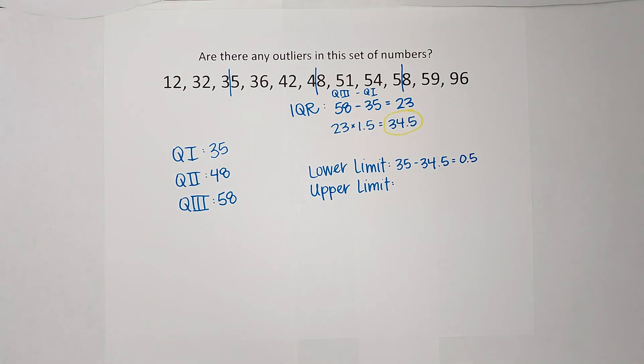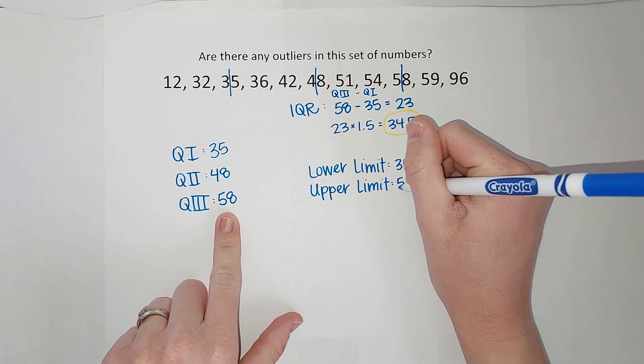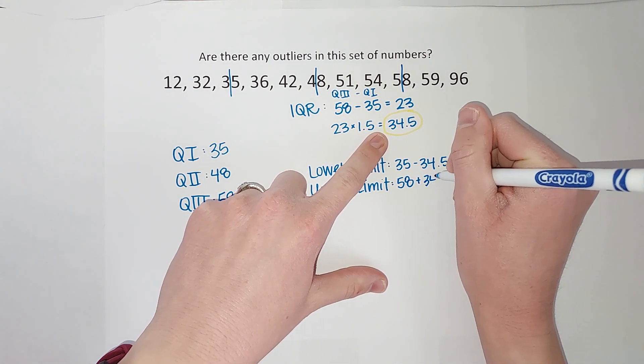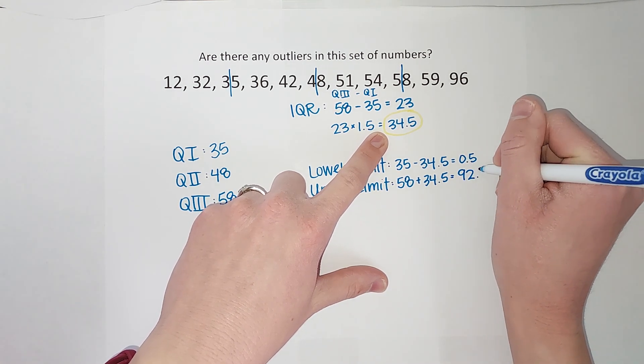My upper limit, you might have guessed, I'm going to take the third quartile, 58, and add this number, 34.5. And I get 92.5.